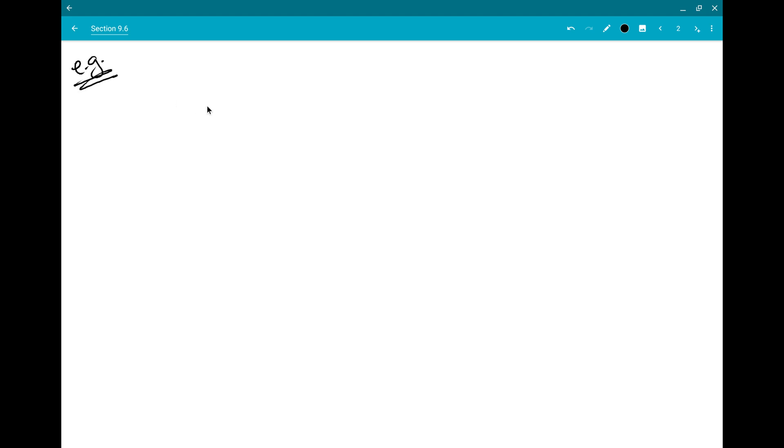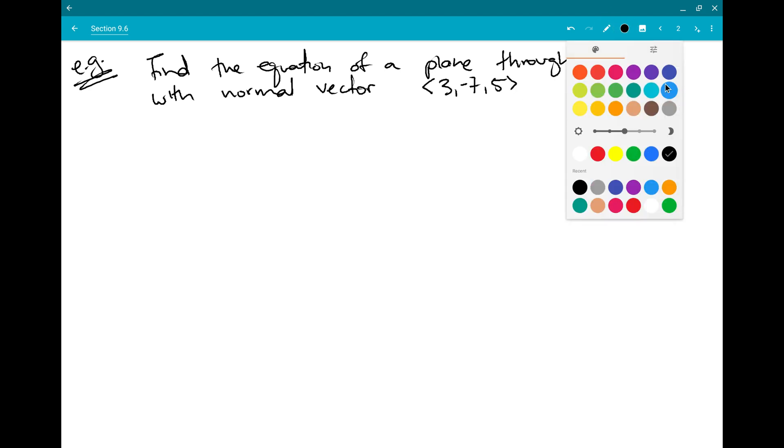Before we think about these trickier problems, we'll just do a real quick easy example where you can see the formula being used. For example, someone might ask me to find the equation of a plane through the point (2, -1, 3) with normal vector given by <3, -7, 5>.